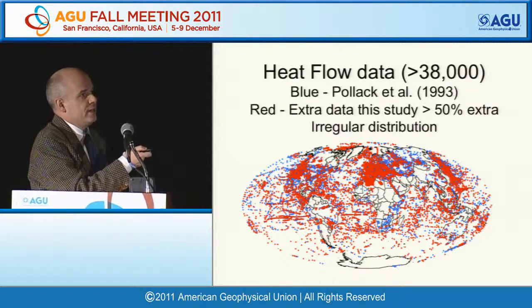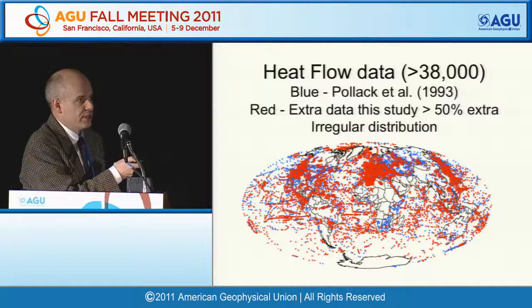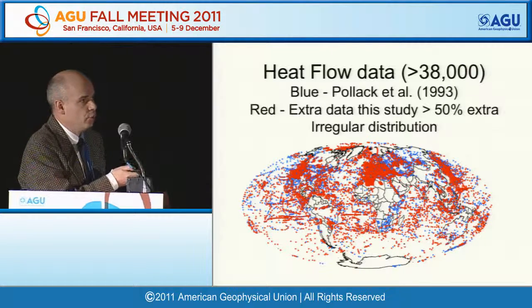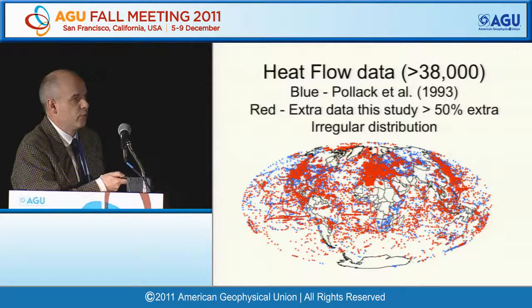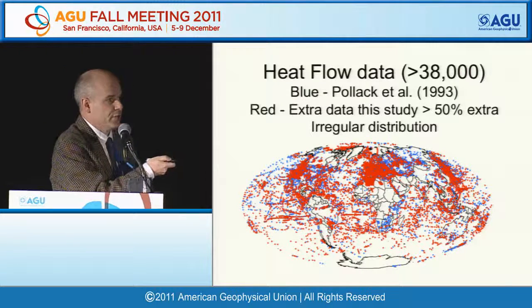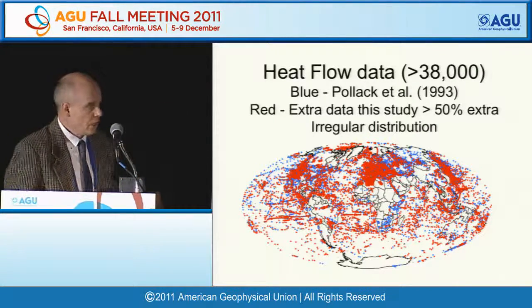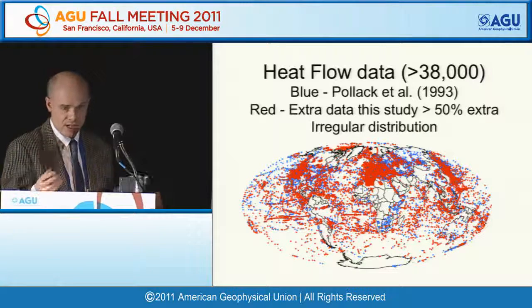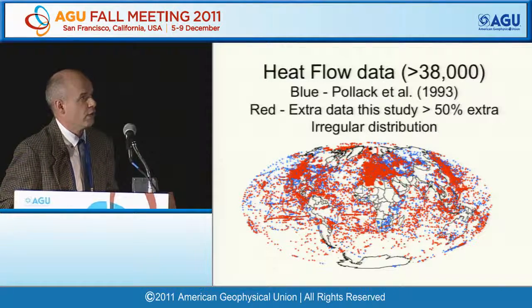This study uses a heat flow dataset of over 38,000 points. It incorporates the dataset of Pollock et al., and this one is about 50% larger. We see a wider distribution of data, but still the data distribution is in some places totally absent and in other places clearly very poor. Part of making an estimate is figuring out how to best interpret data in regions where we have little or no information.